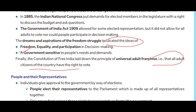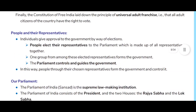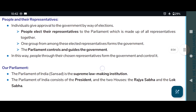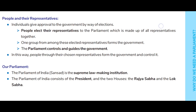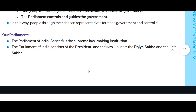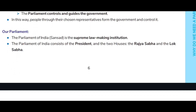Finally, the constitution of free India laid the principle of universal adult franchise — that is, all adult citizens have the right to vote. People elect representatives to the Parliament, which is made up of all representatives together. One group from among these elected representatives forms the government. The Parliament controls and guides the government.